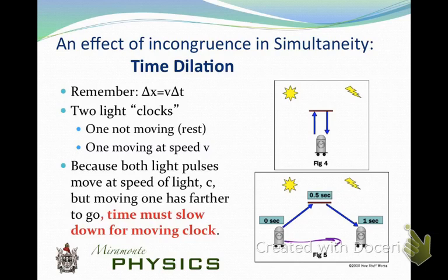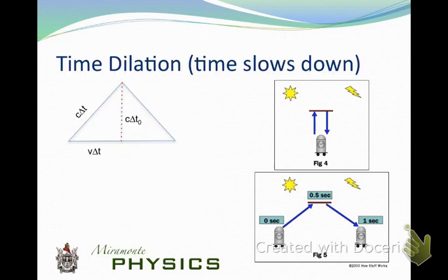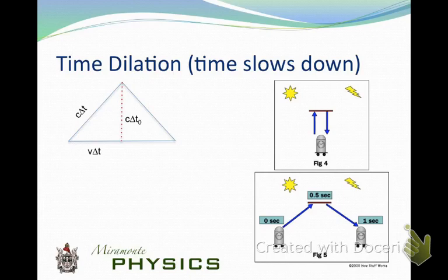Let's figure out exactly what that means mathematically. We have c·ΔT — the distance the light travels on its way up on the moving clock. And v·ΔT is how far the clock itself has moved. Then c·ΔT₀ is the distance for the stationary clock. ΔT₀ is the time it takes if it's not moving, and T represents the time if it is moving.